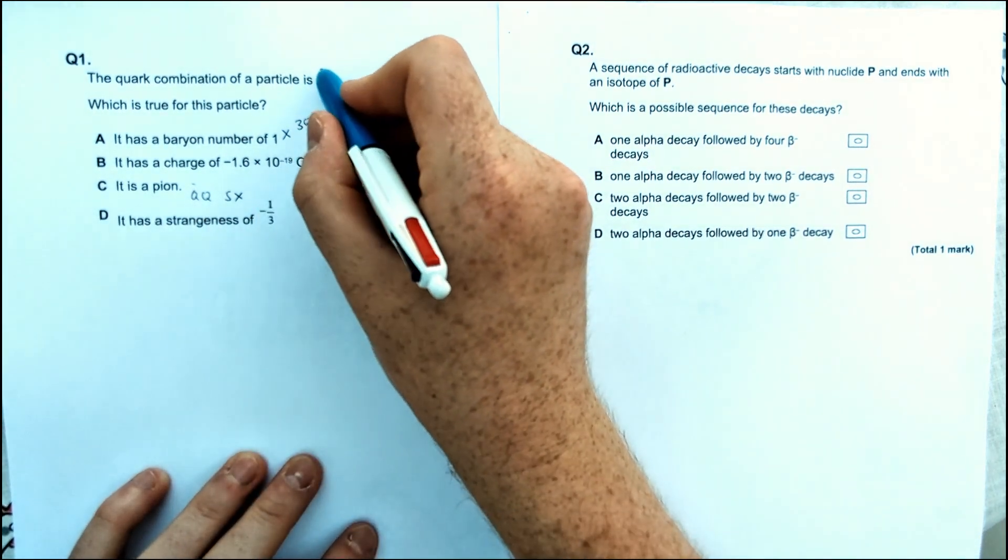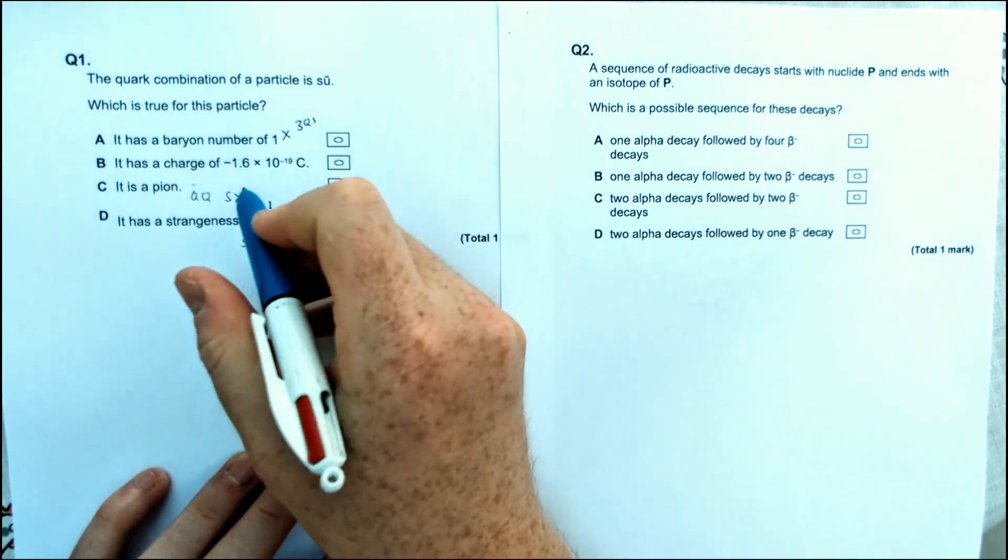Strangeness, it's got a strange quark in it. So that means it has a strangeness of minus 1, not minus 1 third.